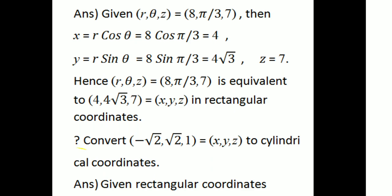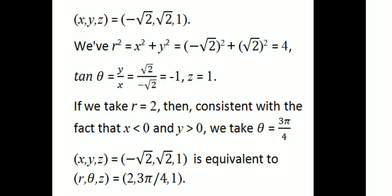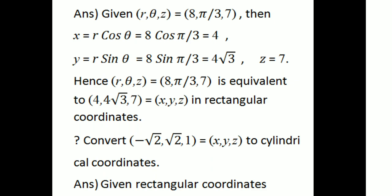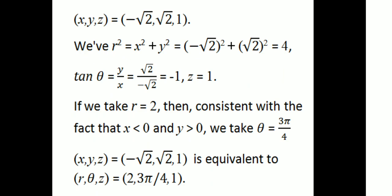Convert the rectangular coordinates (-√2, √2, 1) to cylindrical coordinates R, theta, z. Given x equals -√2, y equals √2, z equals 1. We use R squared equals x squared plus y squared equals (-√2)² + (√2)² equals 2 + 2 equals 4, so R equals 2. tan theta equals y by x equals √2 / (-√2) equals -1.